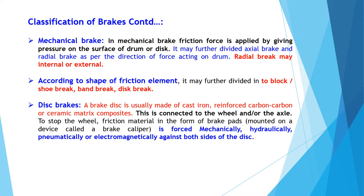The disc brake is usually made of cast iron, reinforced carbon-carbon, or ceramic matrix composites. It is connected to the wheel and to the axle to stop the wheel. Friction material in the form of brake pads is mounted on a device called a brake caliper. The brake pads are forced mechanically, hydraulically, pneumatically, or electromagnetically against both sides of the disc.